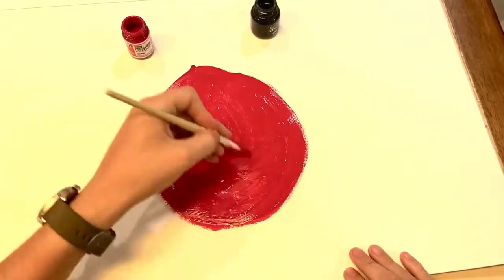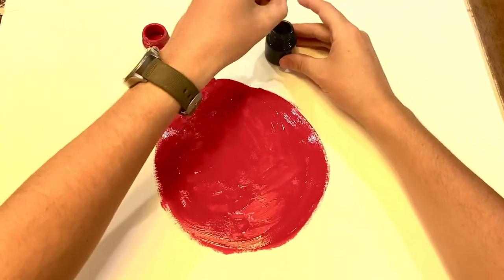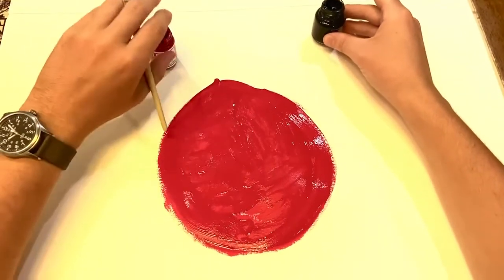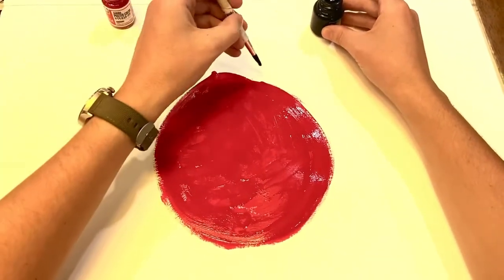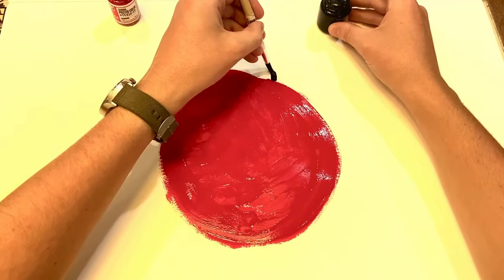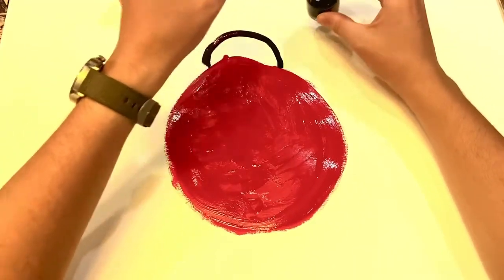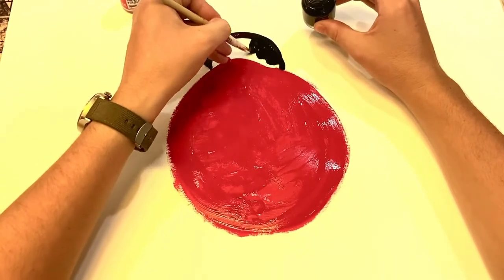Then we're going to use our black paint. Remember you've been practicing your lines. We are going to paint half a circle here and then you can fill it in.